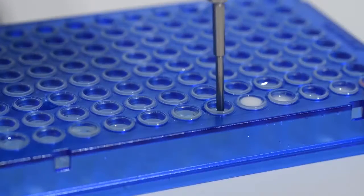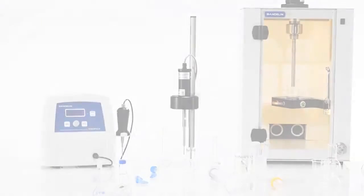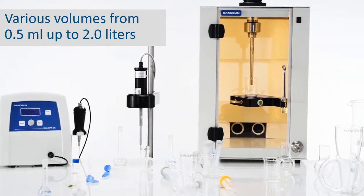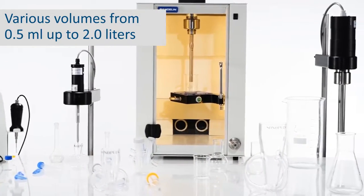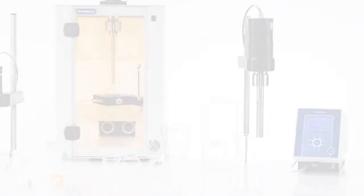Thanks to the Sonopulse Mini, even volumes in the microliter range can be treated. Ultrasonic technology has made the annoying process of decanting samples a thing of the past. There are ultrasonic devices available for all sample volumes, from Eppendorf tubes to falcon tubes to laboratory beakers that can hold up to 2.5 liters.